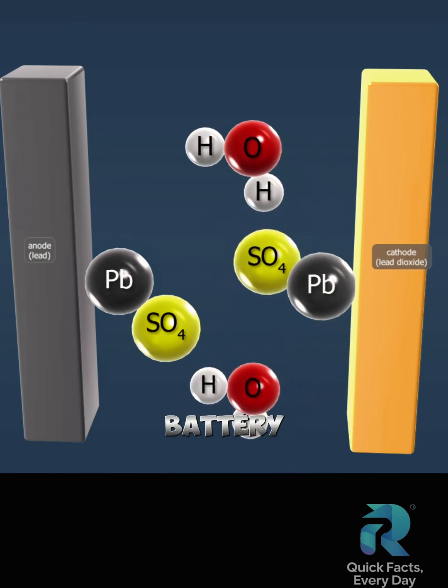This process is reversed when the battery is charged. Lead-dioxide forms on the positive electrode, the cathode, and lead forms on the negative electrode, the anode. Water molecules break up, and sulfuric acid is formed. Thus, the electrolyte becomes more concentrated.